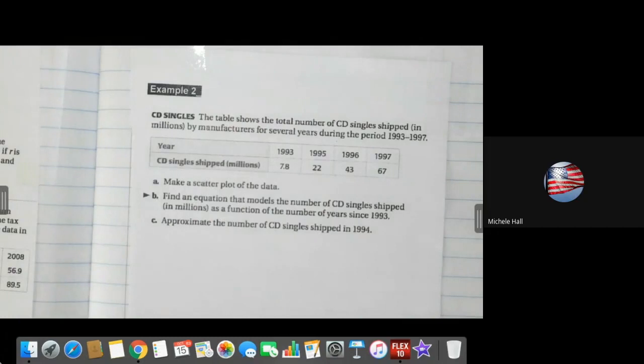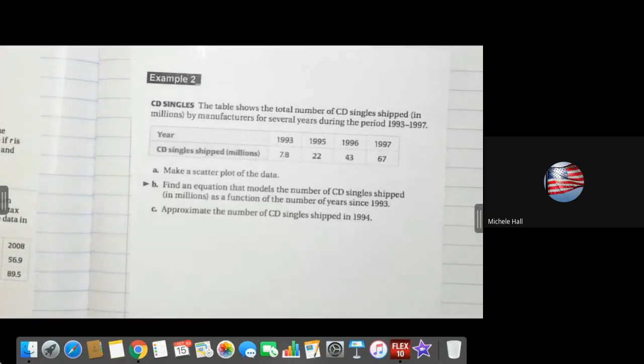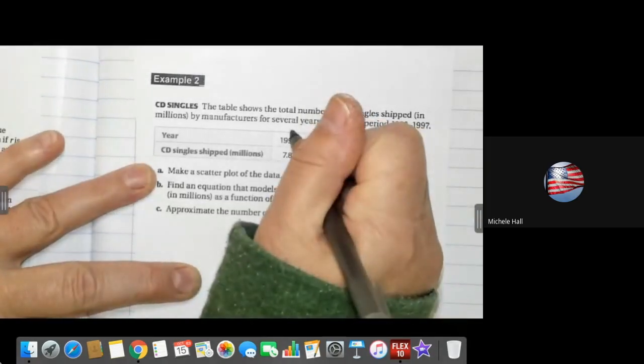Because it goes 93, 95, so 1993 is zero, 1994... 1995 would have to be two. Yeah, watch out for those consecutive dates. All right, so we know that filling in our last two examples of linear regressions that 1993 is going to be zero.